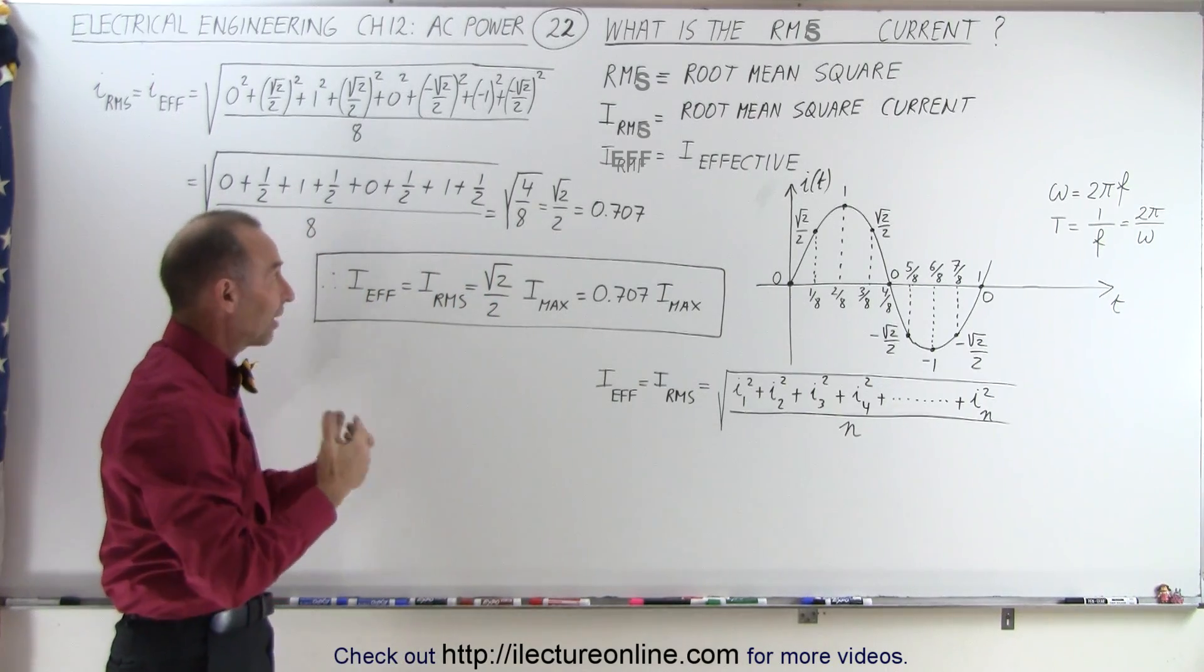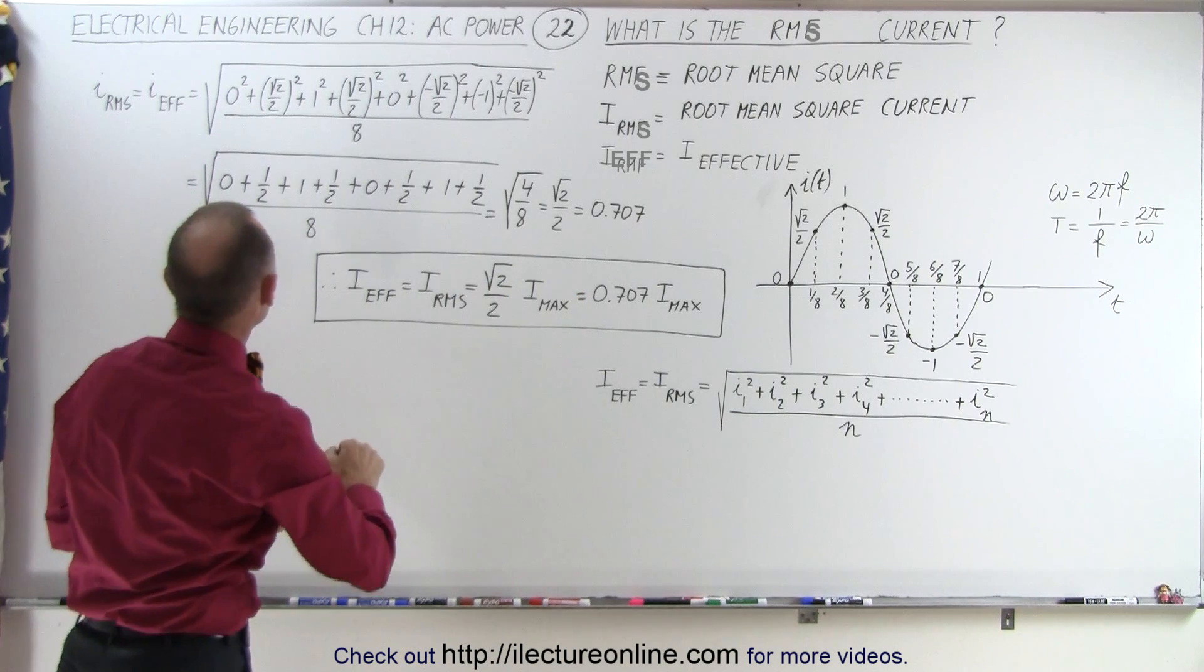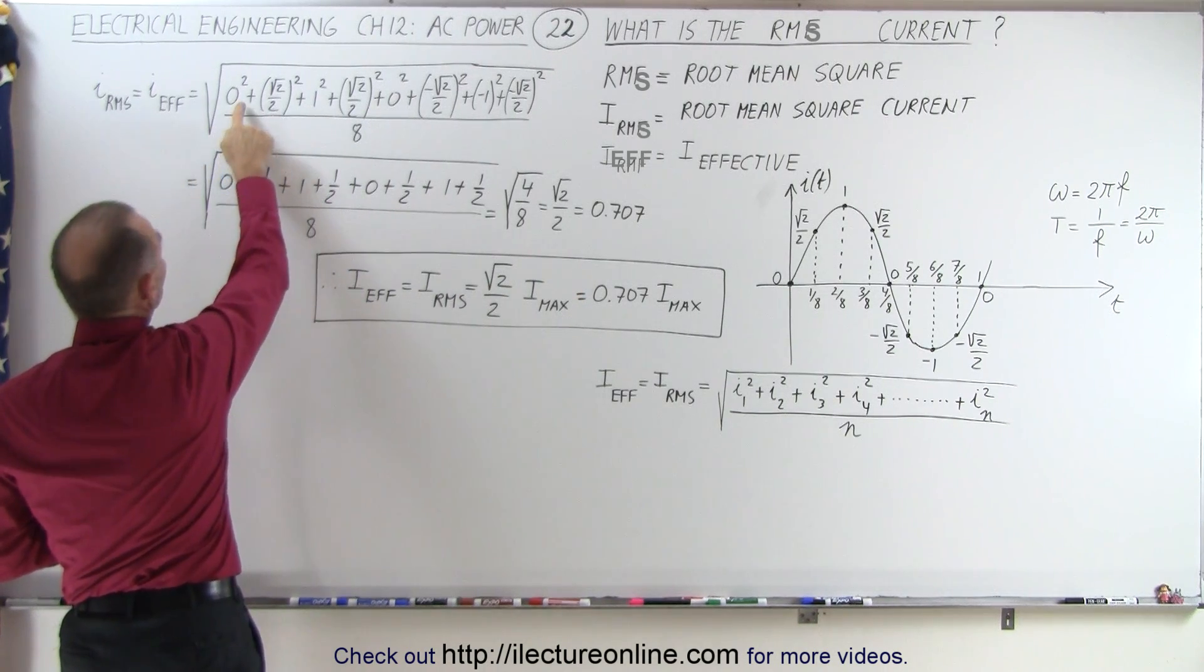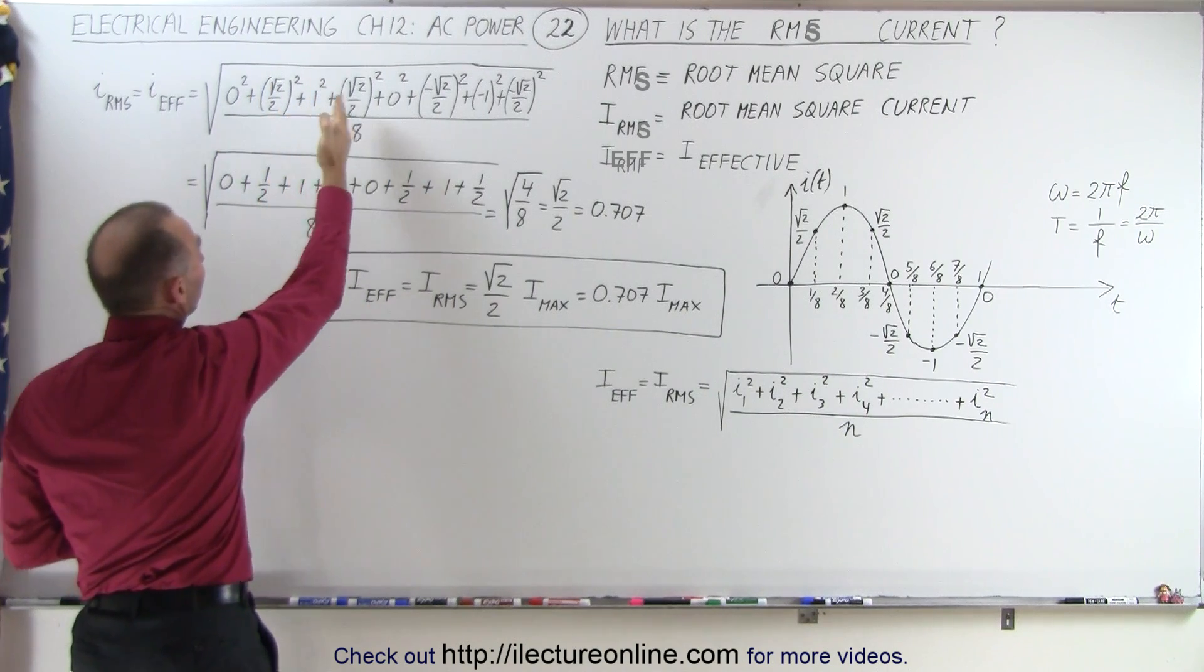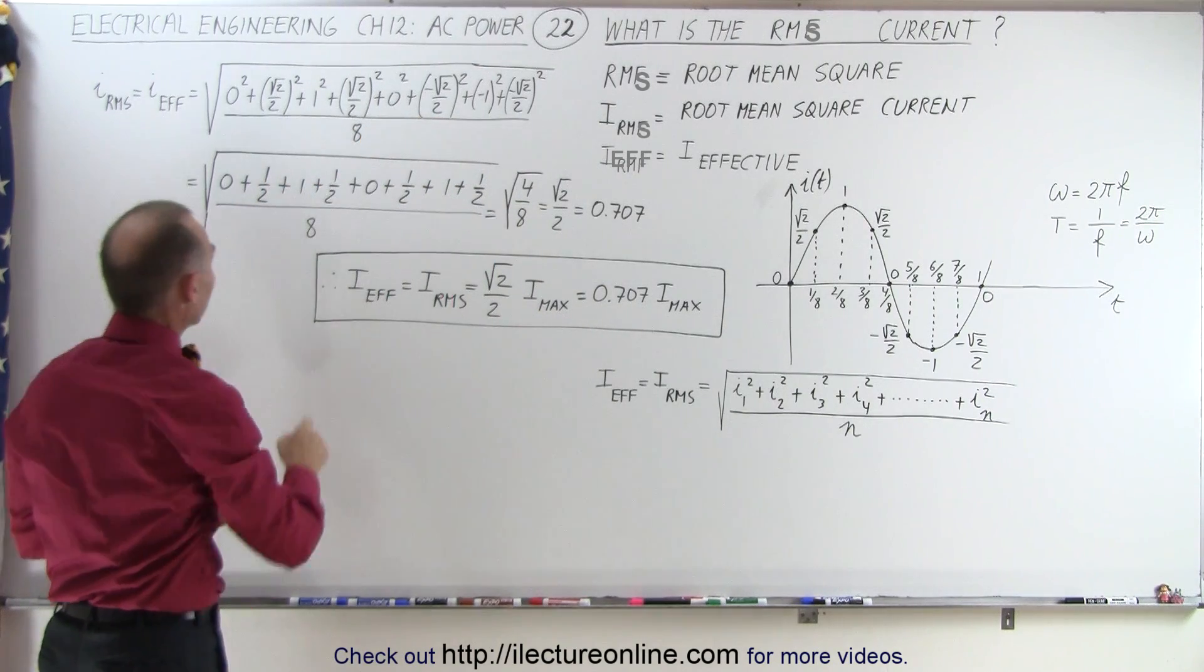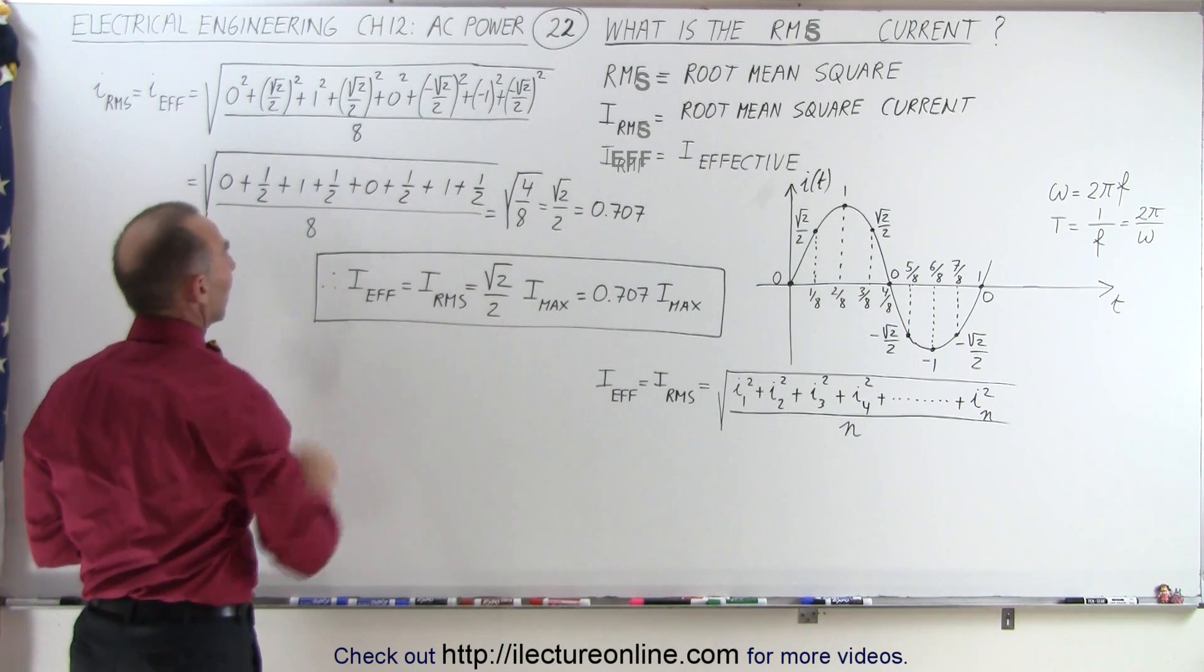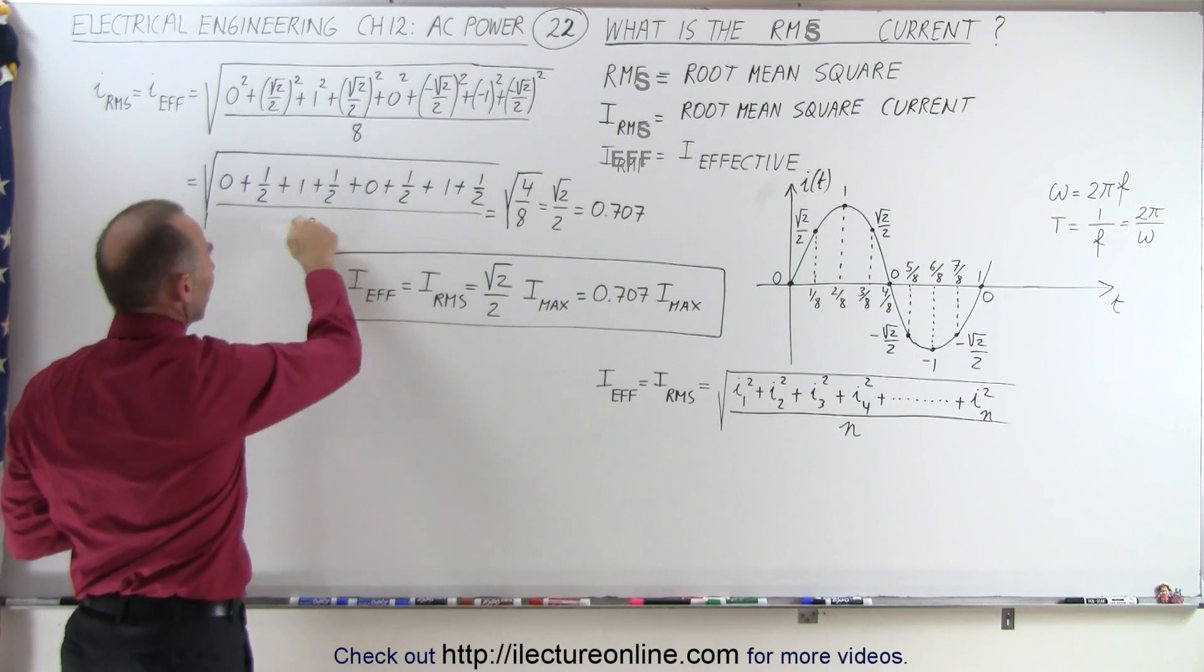So trying that with these eight values, the effective, or RMS current, is equal to, it will be 0 squared plus the square root of 2 over 2 squared plus 1 squared and so forth. We take all eight samples, we square the value of each, we divide it by the total number of points. That then becomes 0, 1/2, 1, 1/2, 0, 1/2, 1, and 1/2, plus 1/2. So that would be the eight sample points, divided by 8.